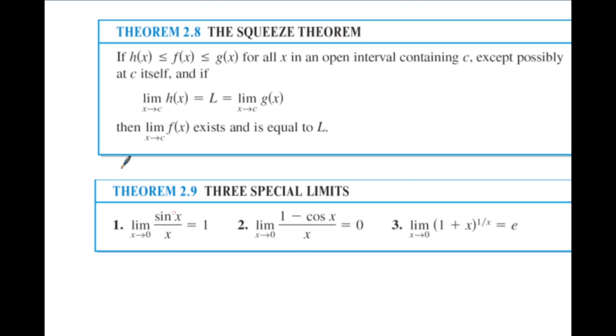So the limit of sine x over x as x approaches 0 is equivalent to 1. The limit of 1 minus cosine x over x as x approaches 0 is equal to 0. And the limit of (1 plus x) raised to the 1 over x power as x approaches 0 is equivalent to e.